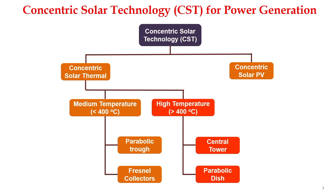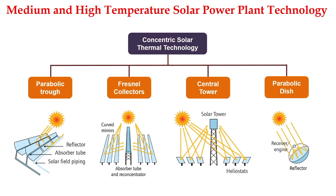Parabolic trough and Fresnel collectors are used to generate medium temperature fluid, or to generate temperatures close to 400 degrees Celsius. High temperature can be generated using the technology called central tower and parabolic disc. Our discussion will be primarily on concentrating solar thermal in this class.